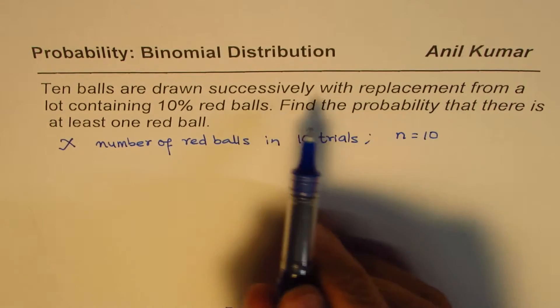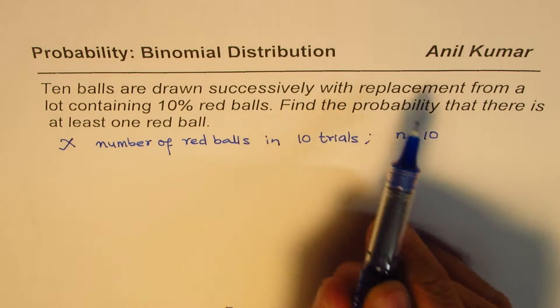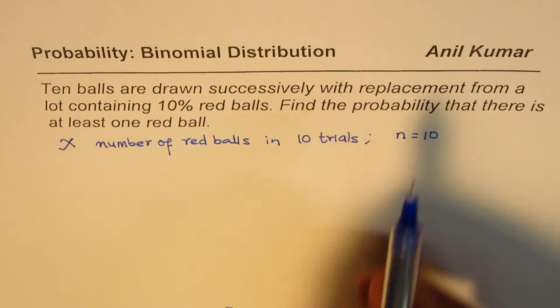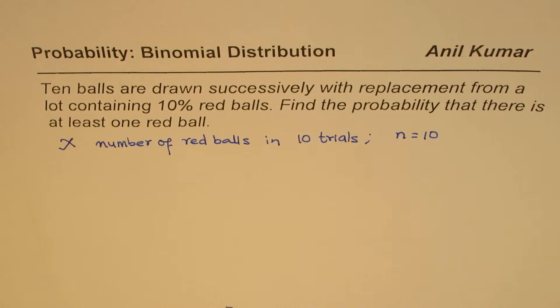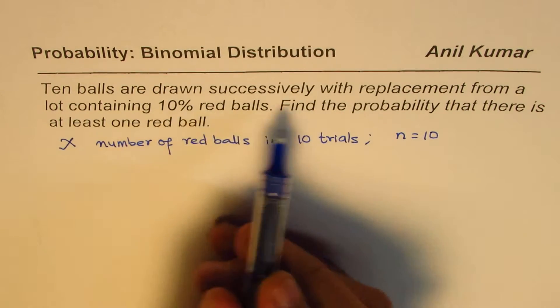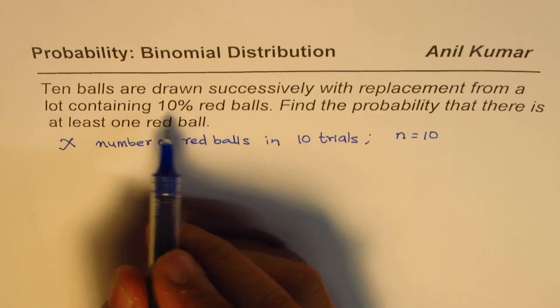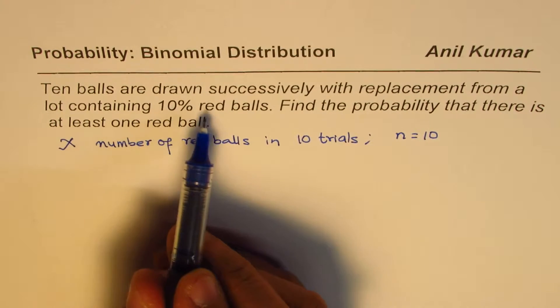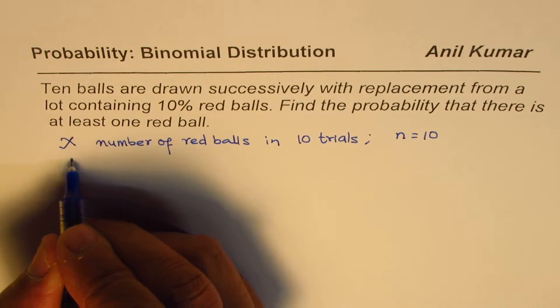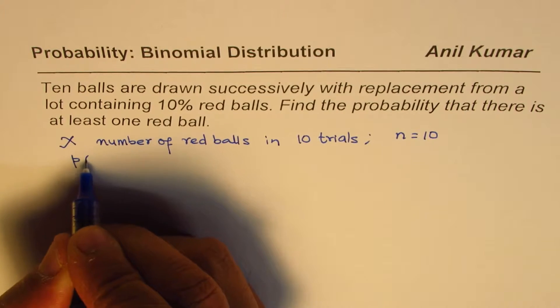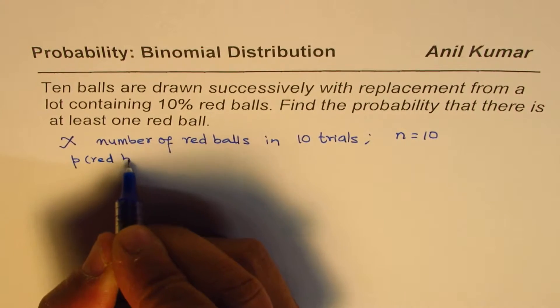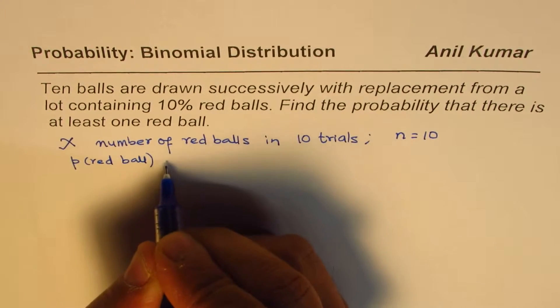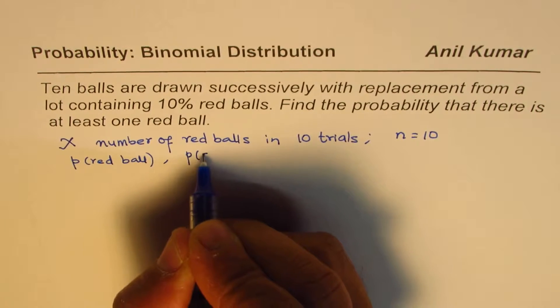Now it is also giving us successively with replacement. So with replacement means it's a case of independent experiment where the probability will remain the same since the ball has been replaced. And probability should be how much? The lot contains 10% red balls.